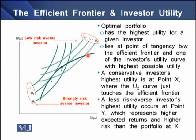The optimal portfolio is the portfolio that has the highest utility for a given investor. Such a portfolio lies at the point of tangency between the efficient frontier and one of the investor's utility curves. The point where the investor's utility curve is tangent to the efficient frontier is called the optimal portfolio, because it offers the highest utility to the investor.